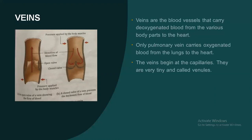The veins have pocket-shaped semilunar valves that open towards the heart to stop the blood flowing in the backward direction. The semilunar valves are made up of folds of the inner lining of the veins. The forward pressure of blood forces the valves to open, as a result of which blood flows towards the heart. The backflow of blood causes the valves to close.